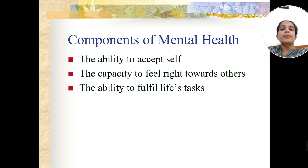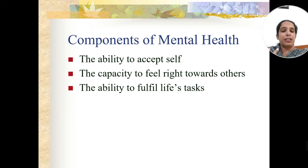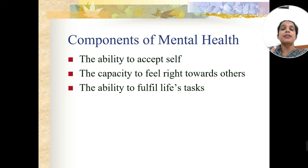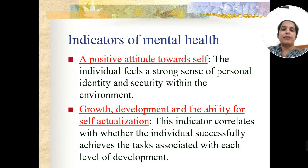The second component is the capacity to feel right towards others — the person has the right feeling and right capacity towards others. The third component is the ability to fulfill life tasks — whatever tasks are there in their life, the person is able to fulfill them properly.